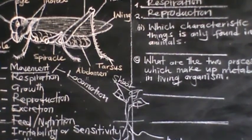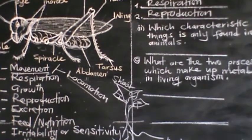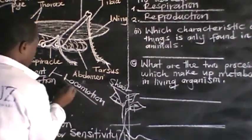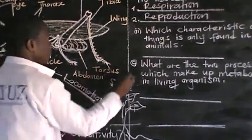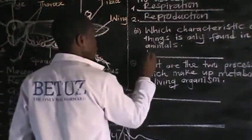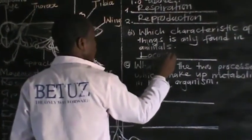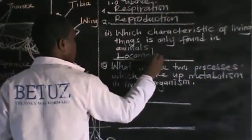So the characteristic only found in animals is locomotion.